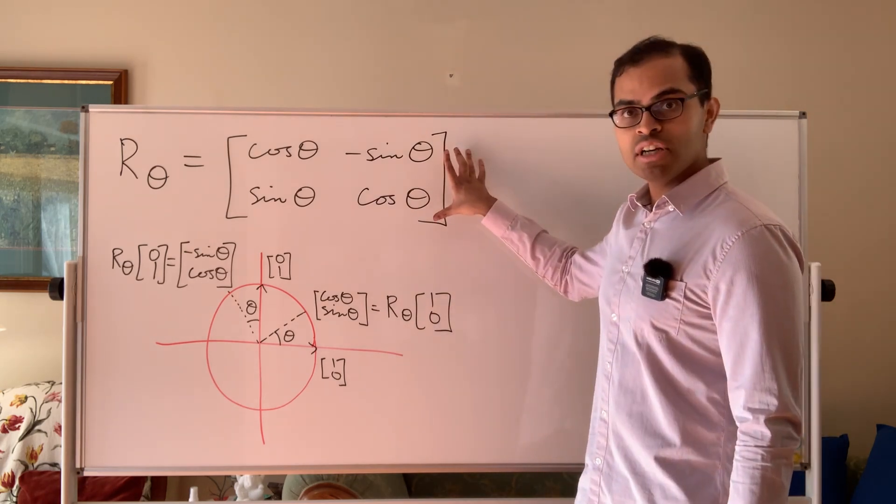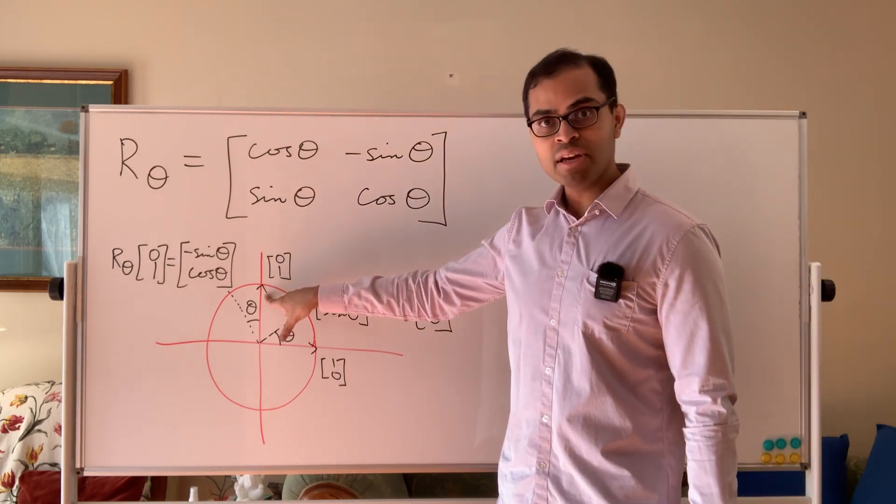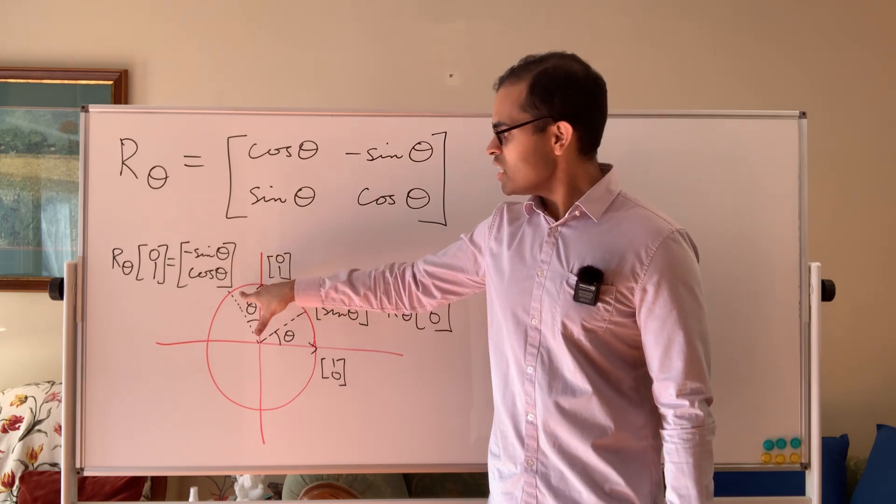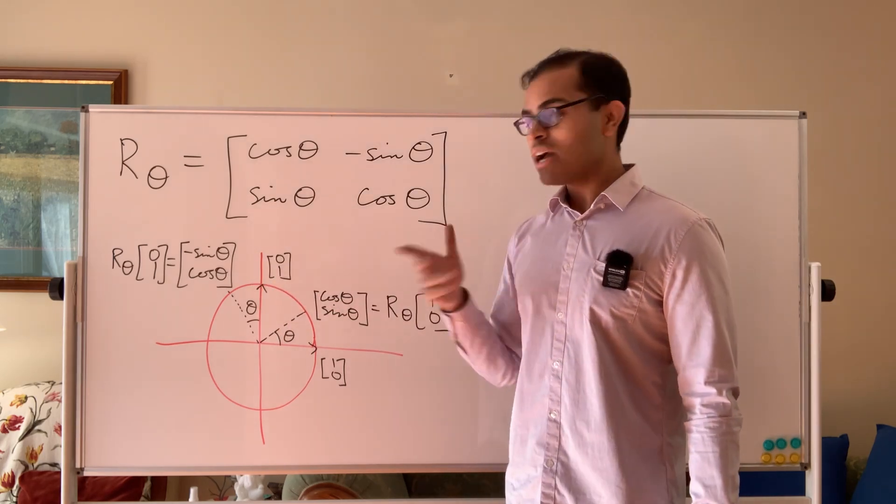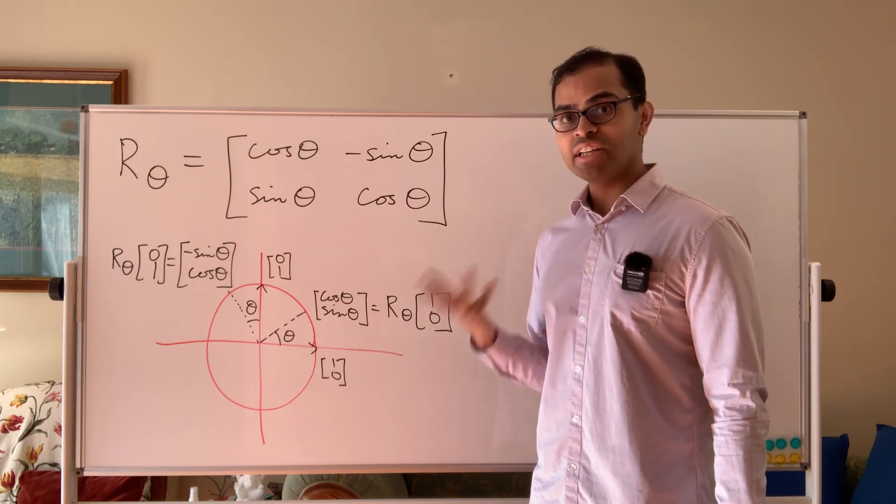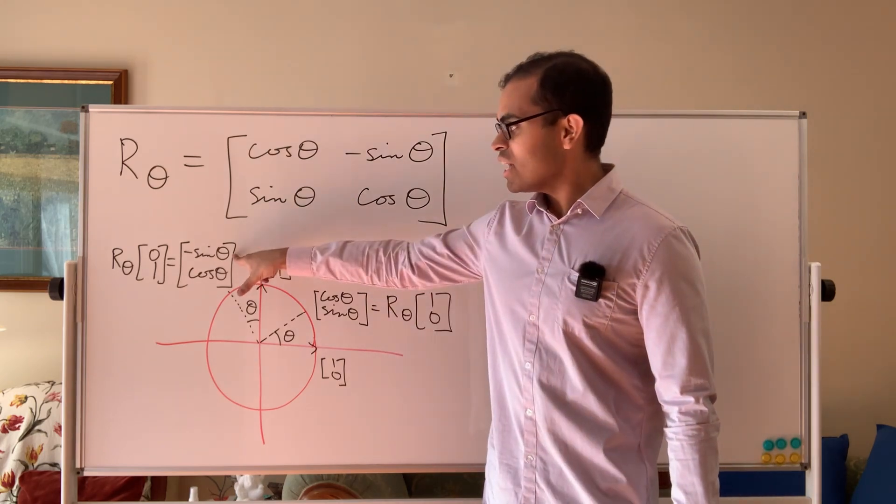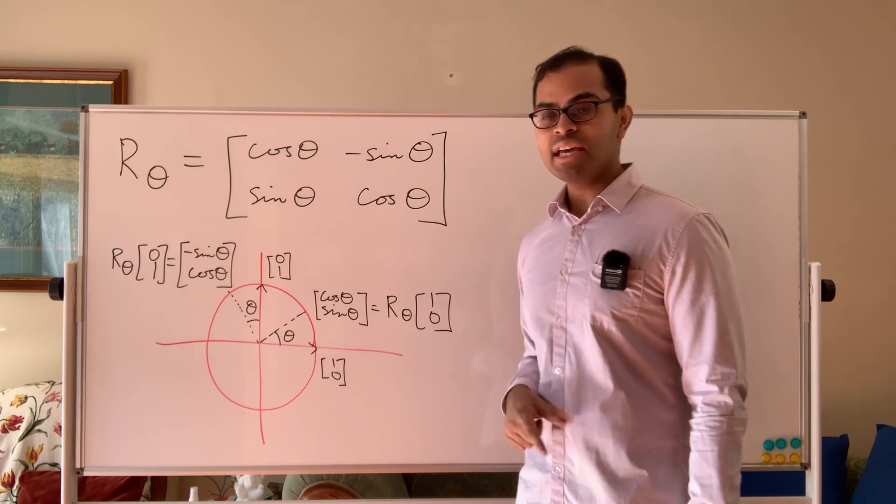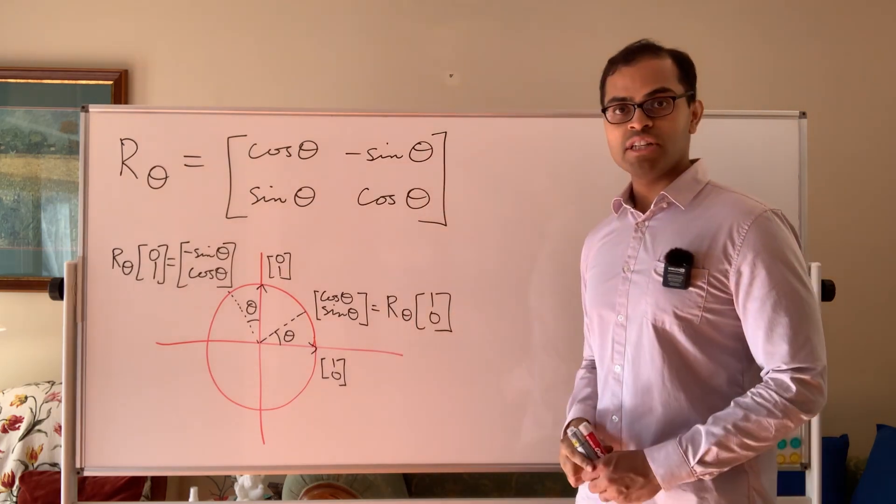Similarly, the second column of the matrix is what your transformation does to the second basis vector 0,1, which is going to be this point, cosine of theta plus 90 comma sine of theta plus 90. But that actually winds up to be minus sine theta cosine theta. So that is the second column of your rotation matrix.